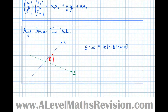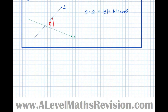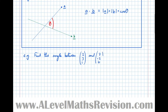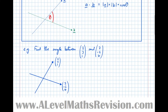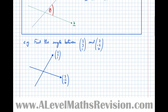Let's now look at an example using this formula. Find the angle between vectors (2, 3, 1) and (7, -2, 6). Let's draw a quick diagram to visualize what's going on — it doesn't have to be accurate. The quantities we need to find are A dot B, the length of A, and the length of B, which will allow us to find cos theta. So let's get those quantities now by computing the scalar product of the two vectors.